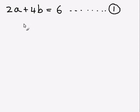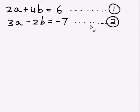First we have 2a plus 4b equals 6. It's always good to label your simultaneous equations with a number so you can refer to them by the number. So that's equation 1. Equation 2 is 3a minus 2b equals negative 7, and I'm going to label that with a 2.